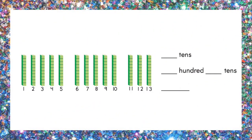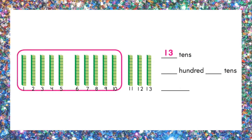Here's another. Let's write how many tens there are: thirteen. Now circle ten of them and write the number in different ways. One hundred and three tens is one hundred thirty.